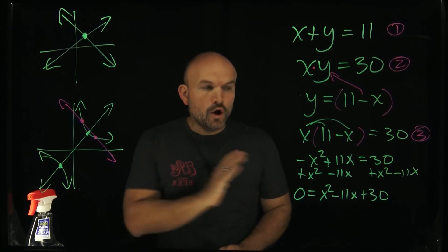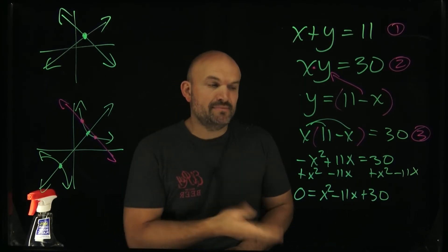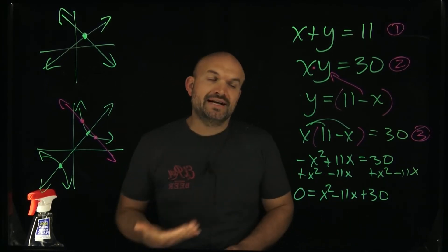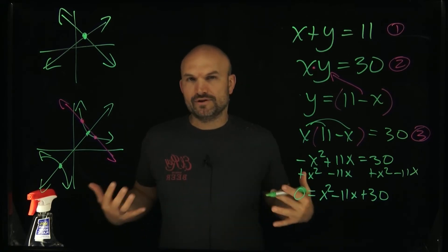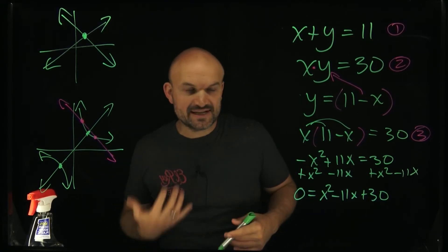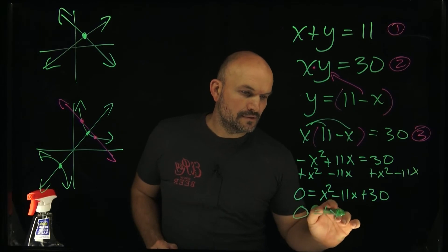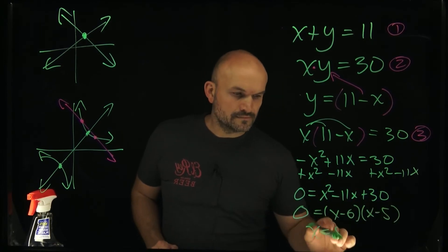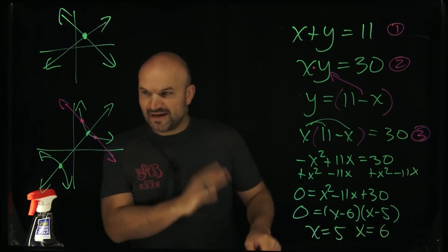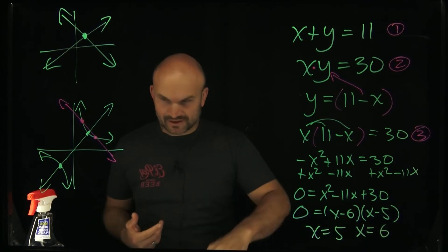And now what I need to do is identify what two values do I need to multiply to give me a positive 30 that are going to add to give me a negative 11. And hopefully you recognize those two values are going to be negative 6 and negative 5. So you can see that there's actually two values. We have x equals 5 as well as x equals 6.